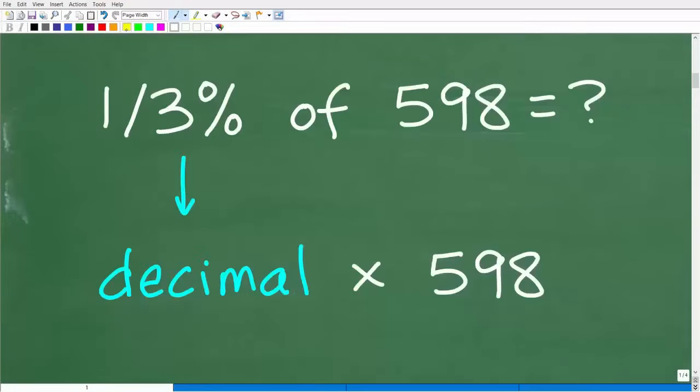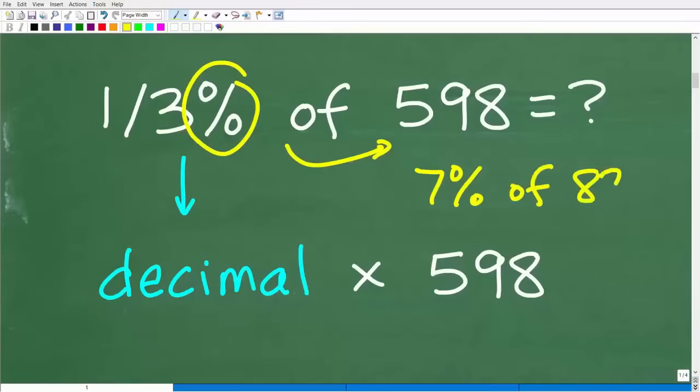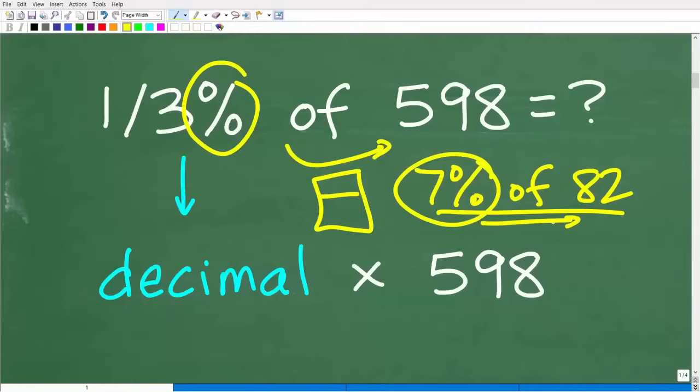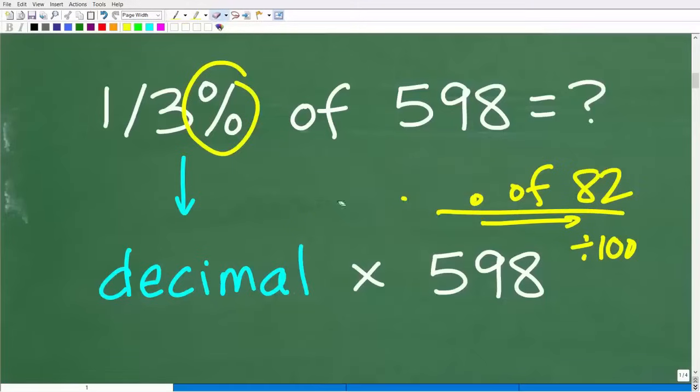Let's review how we would do this problem using a calculator. What we're doing is finding the percent of a number, basically like this question here, 7% of 82. So how would we do this? Let's suppose we did have a calculator available. We would change this percent to a decimal, and then multiply by 82. So 7% as a decimal would be 0.07. To go from a percent to a decimal, we divide by 100 or move the decimal point two places to the left.